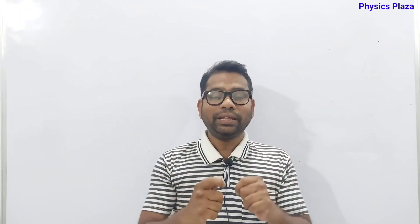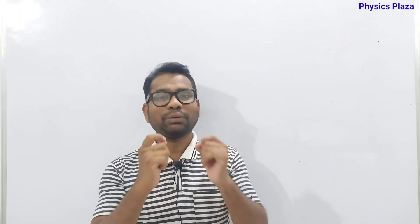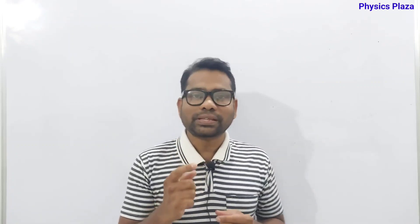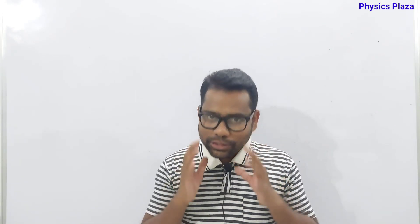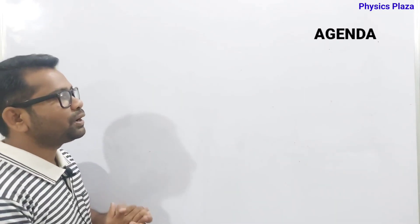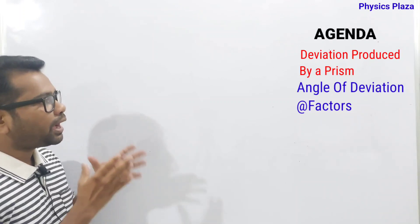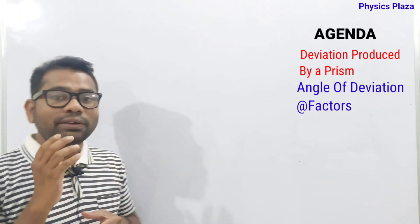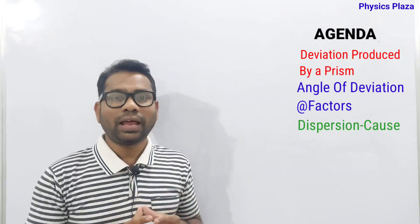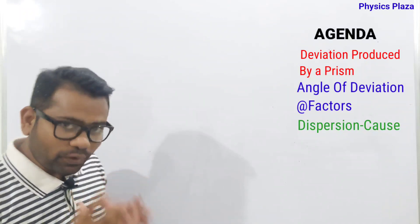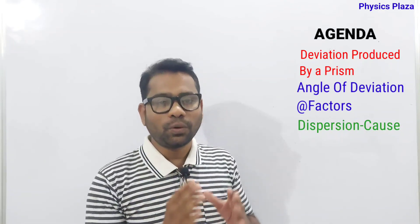Hello children. In today's class we will be starting a new chapter: Spectrum. It is a very easy chapter, simple to understand, and very easy to score. In today's session we will be discussing Unit A of the Spectrum — what happens when monochromatic light passes through a prism, the angle of deviation, dispersion, the cause of dispersion, and finally what a spectrum is.